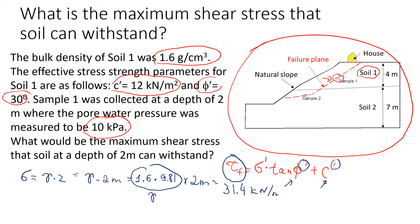This one is total stress. We need to change it to effective stress. To change to effective stress we need to subtract pore pressure, so total stress minus pore pressure. Pore pressure was measured to be 10 kPa, so the effective stress will be 31.4 minus 10, which gives us 21.4 kPa.